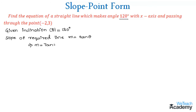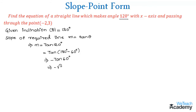tan 120 can be written as tan(180 degrees minus 60 degrees). Since it is in the form of tan(180 minus theta), we get minus tan theta, which gives us minus tan 60 degrees. The value of tan 60 is root 3, so that implies we get minus root 3 as the value of m.